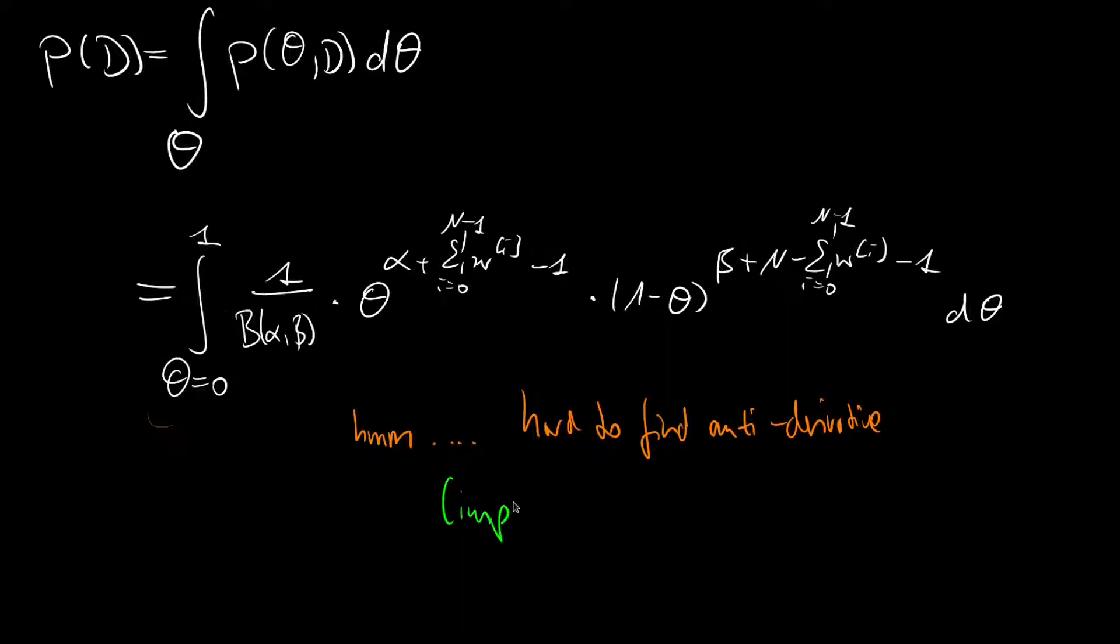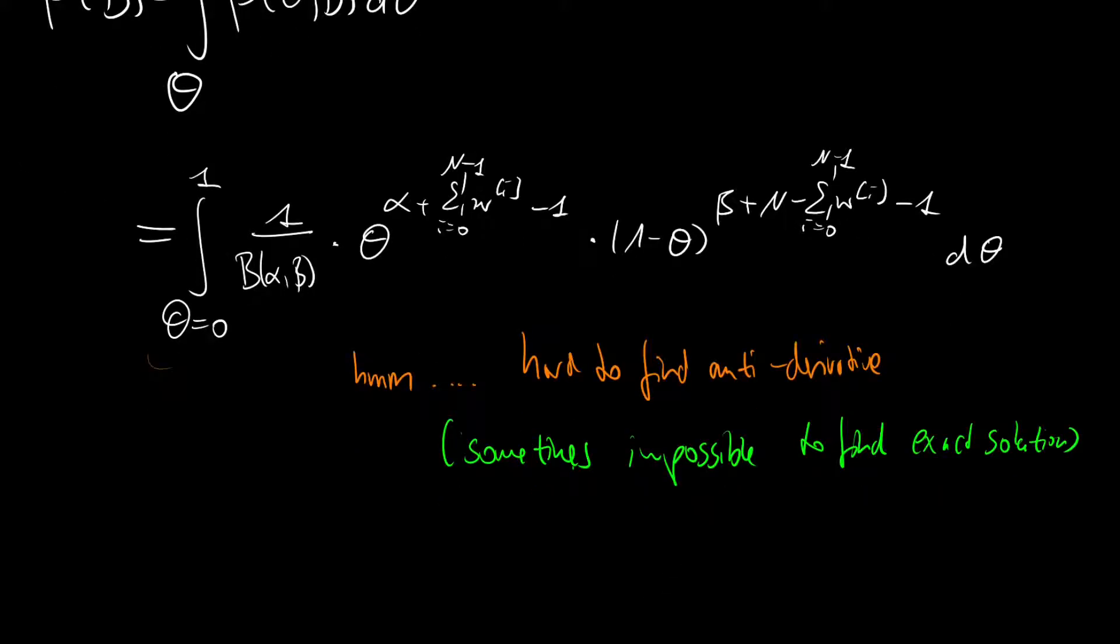You soon start to reach a limit where you would give up just because it's too difficult. And sometimes it's also impossible to find this anti-derivative. It is impossible, or in our case not, but sometimes impossible to find exact solution. And this is also what is commonly referred to as intractability, or this means it is intractable. It is intractable to find an exact representation of the marginal.